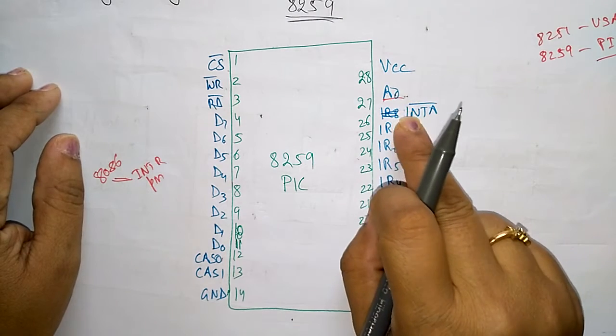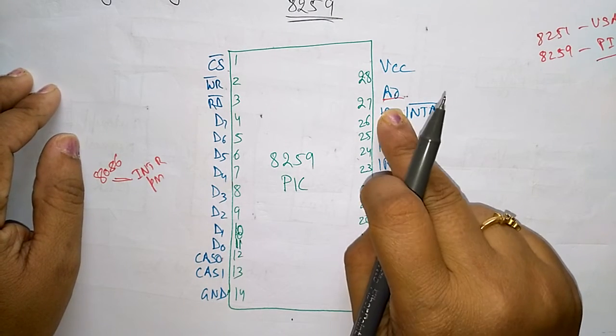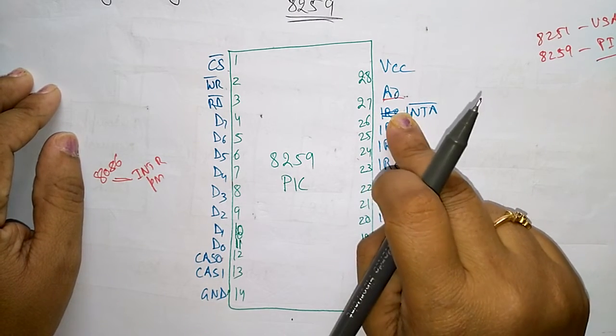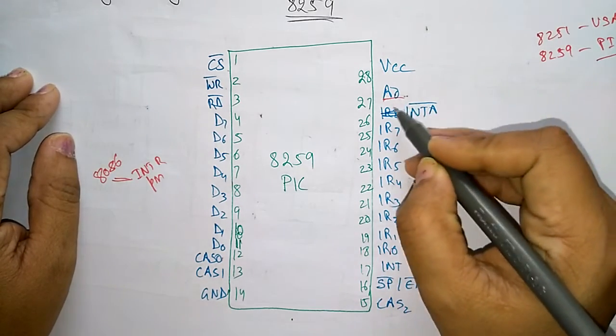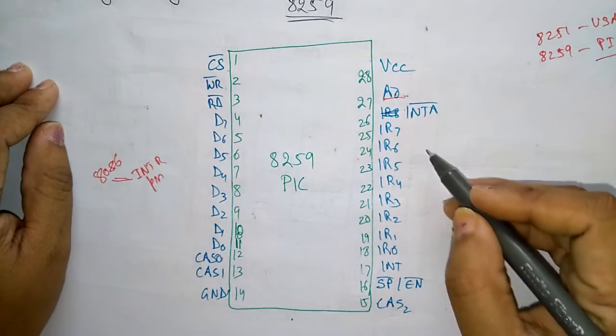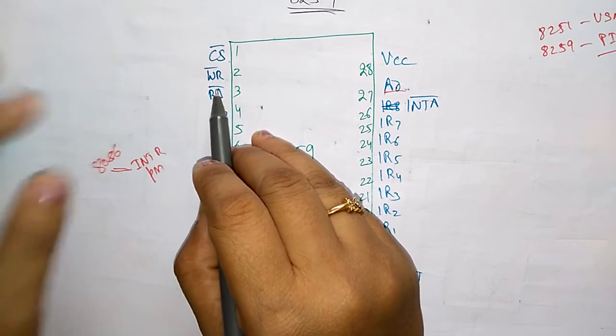Now coming to A0. This pin acts in conjunction with the read or write signals. When to read the data and when to write the data, everything will be in conjunction with this A0 and read and write.